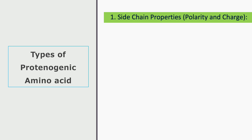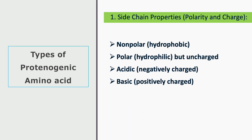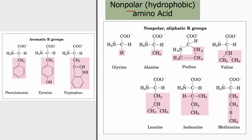Based on side chain properties, from the alpha carbon there is a side chain denoted as R. On the basis of the polarity and charge of this side chain, we can classify proteinogenic amino acids into different groups: non-polar, which are hydrophobic; polar uncharged, which are hydrophilic; acidic, which are negatively charged; and basic, which are positively charged.